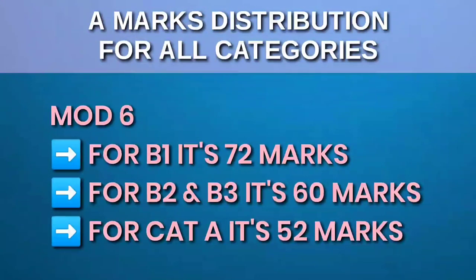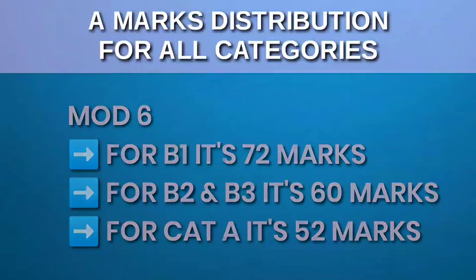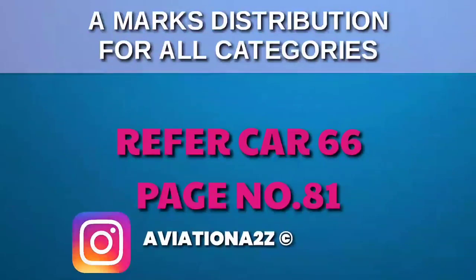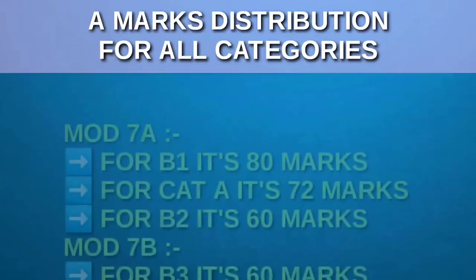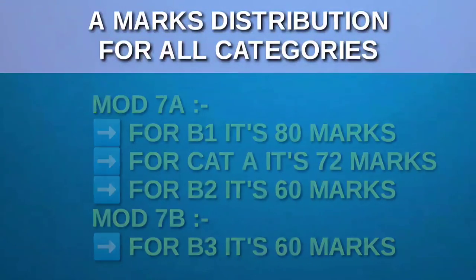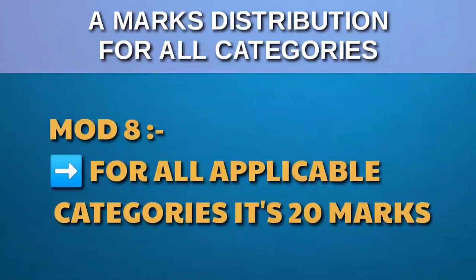Module 6 is of 72 marks for B1, 60 marks for both B2 and B3, and 52 marks for category A. To know the minimum passing marks for all modules, refer CR66 page 81 or check out my Instagram post — link in description. Module 7A: for B1 it's 80 marks, for category A it's 72 marks, and for B2 it's 60 marks. 7B is for B3 and it's 60 marks as well. For module 8, it's 20 marks for all applicable categories.